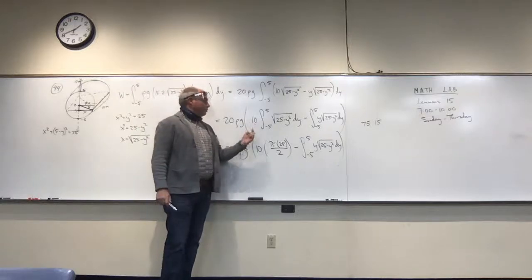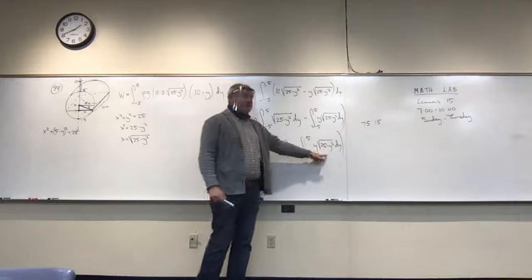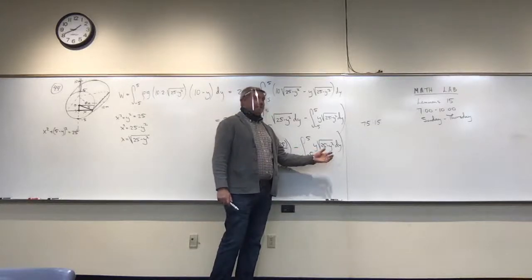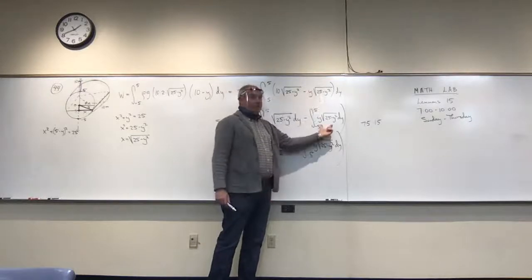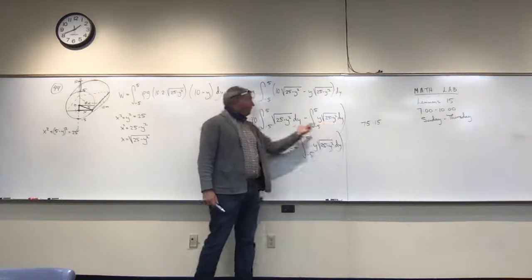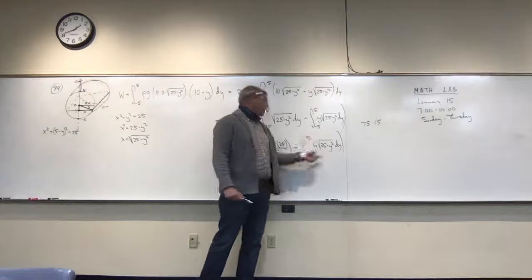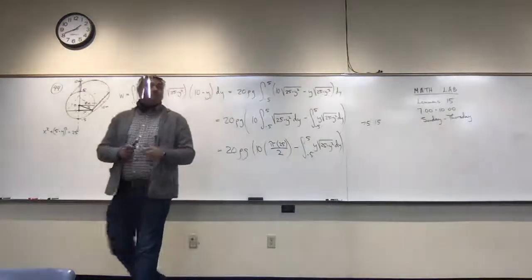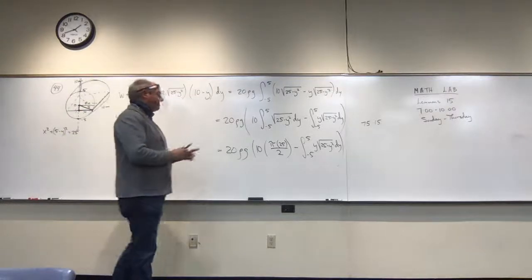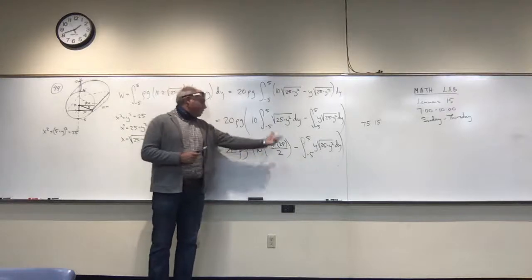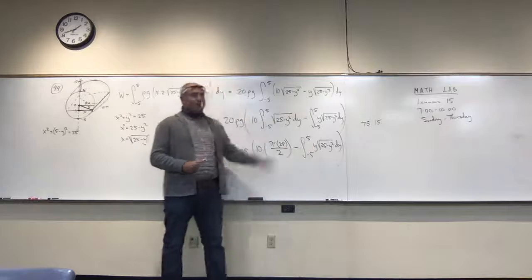The second integral ∫₋₅⁵ y√(25 − y²) dy still needs evaluation via u-substitution. Let u = 25 − y², so du = −2y dy. Changing the limits: when y = −5, u = 0; when y = 5, u = 0. Both limits are the same! So ∫₀⁰ √u du = 0. That entire second integral vanishes. Be careful when pulling constants through the factoring — distribute correctly before simplifying.